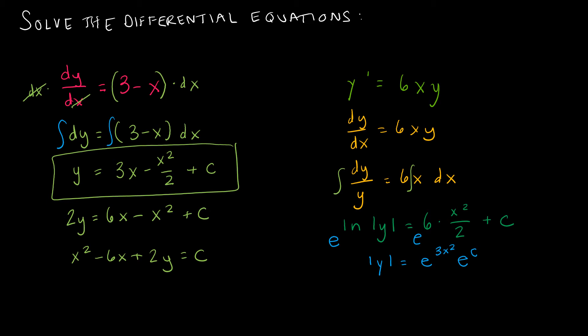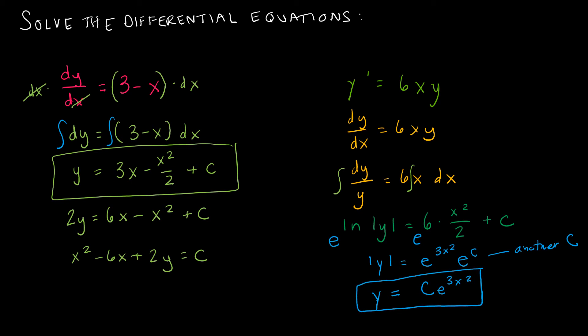Dropping the absolute value introduces a plus or minus, so y equals plus or minus e to the c times e to the 3x squared. Since e to the c is just a constant, I'll call it c. And because c can be positive or negative, I don't need to keep the plus or minus. The final solution is y equals c times e to the 3x squared.